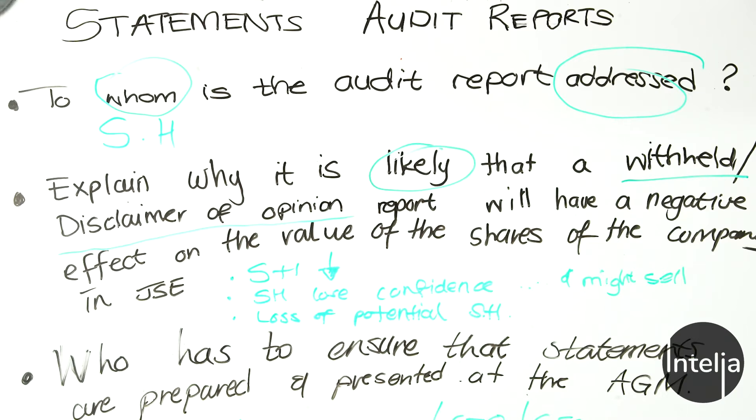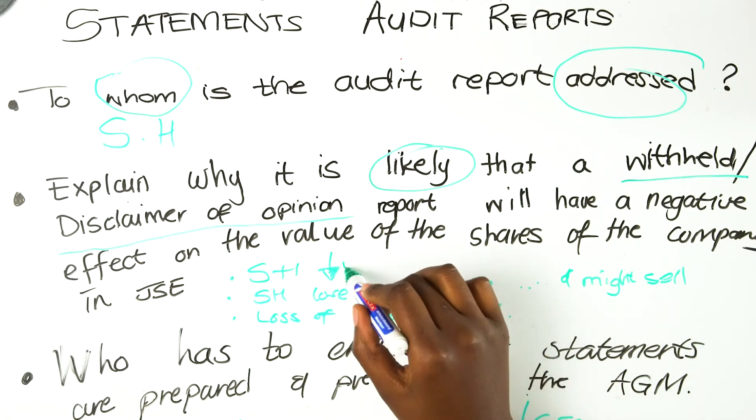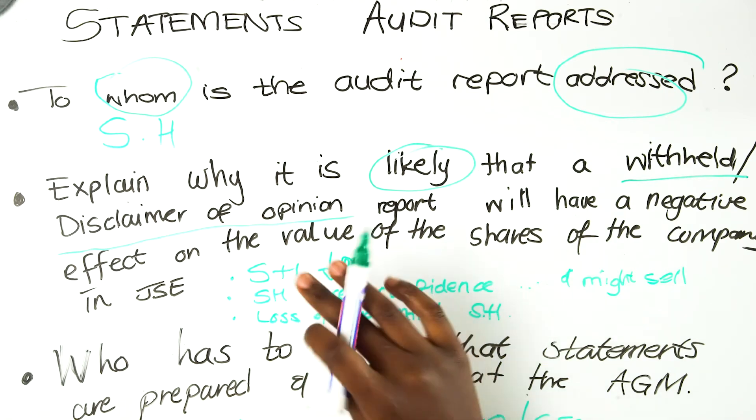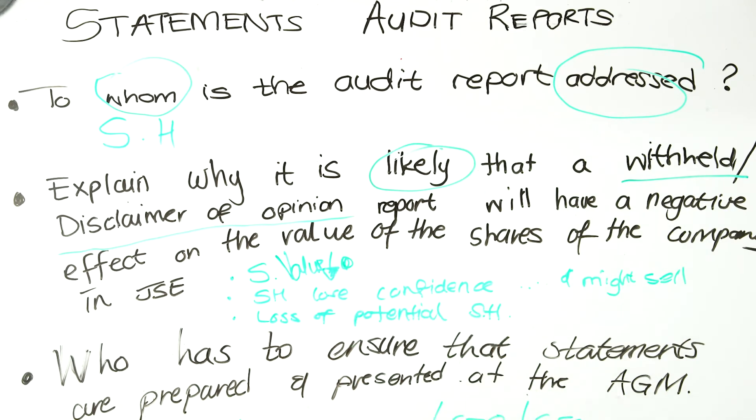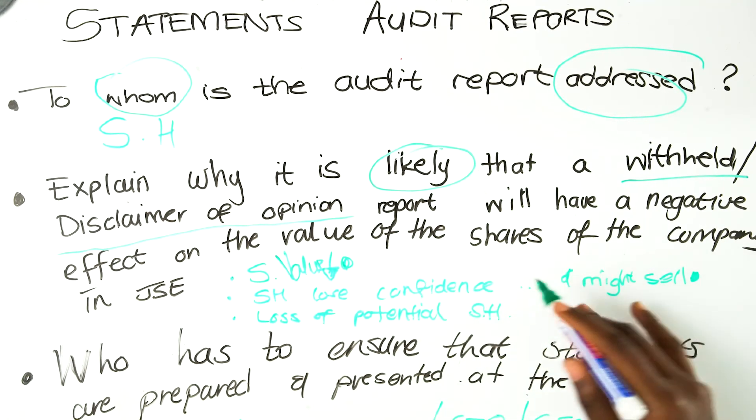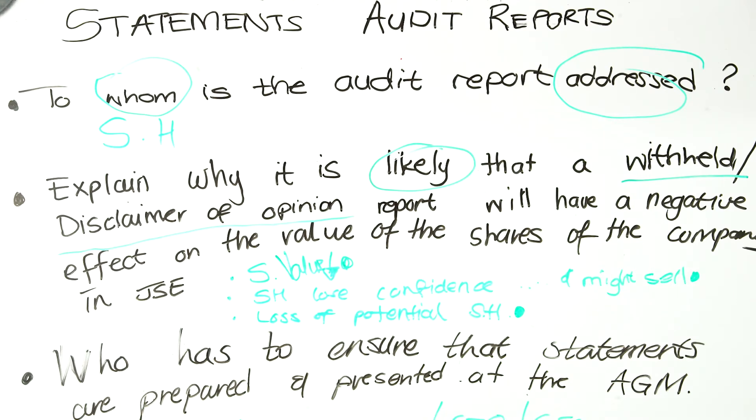Another thing that could negatively affect the business because of this type of report is the company could lose potential shareholders. Someone looking across available shares might think about investing, but upon seeing a disclaimer of opinion or withheld opinion, they will reconsider their involvement because they don't want to get into a losing arrangement. So to summarize: share value will decrease, shareholders lose confidence and might sell, and there is a loss of potential shareholders.